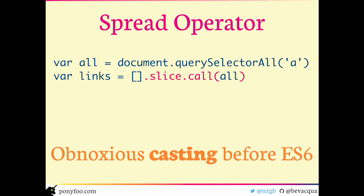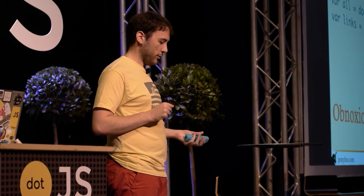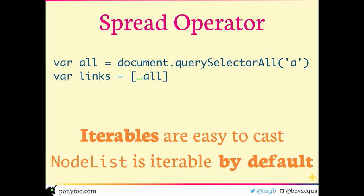Before ES6 it was really hard to cast array-like objects into true arrays — you had to know to use 'Array.prototype.slice.call', which gets deep into JavaScript quirks. With the spread operator you can just spread the parts of your array-like into an array, as long as it's an iterable object. In ES6, things like 'arguments', node lists, and similar are array-likes, so it's much easier to cast them into true arrays.